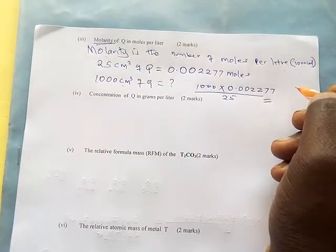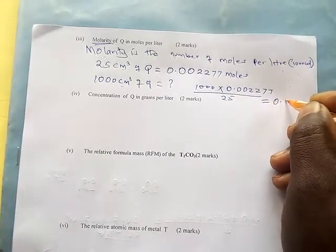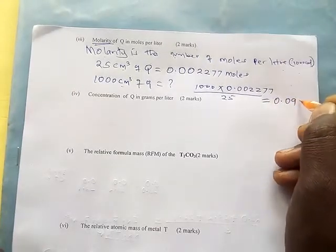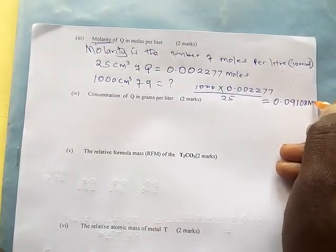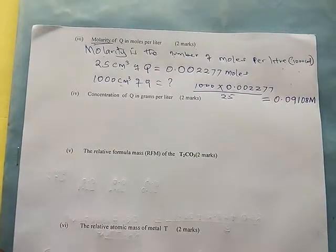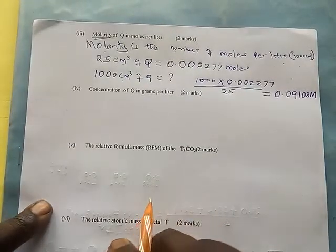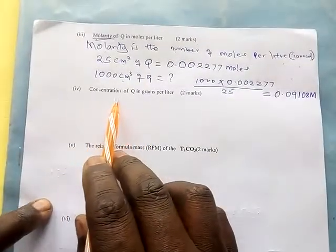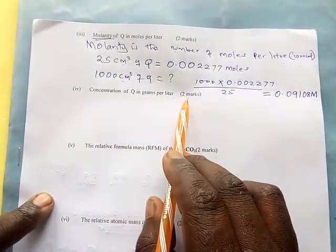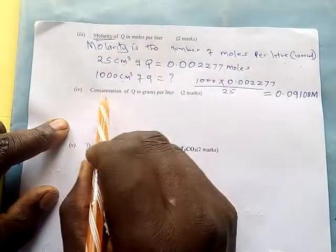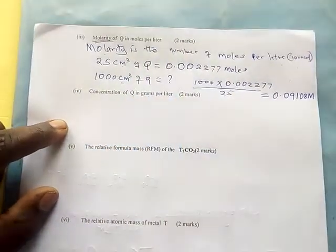That is: 1000 × 0.0002277 ÷ 25, which gives us 0.09108 M. That is the molarity of solution Q.